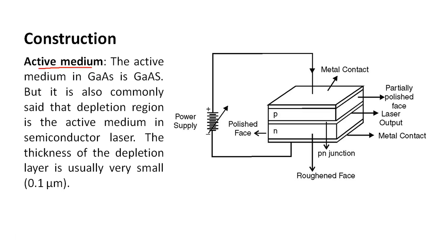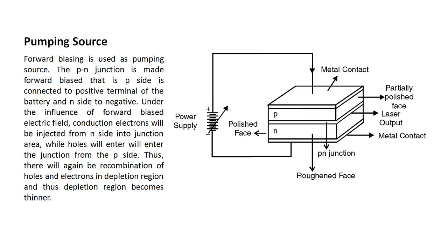The active medium is gallium arsenide. This is one of the mediums used to produce semiconductor laser. It is also commonly said that the depletion region is the active medium in a semiconductor laser. The thickness of the depletion layer is usually very small — 0.1 micrometers.